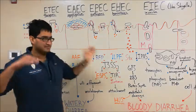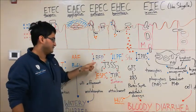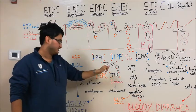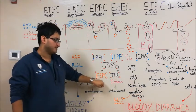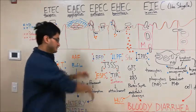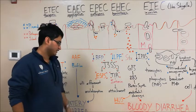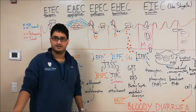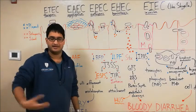When you think EPEC, it initially binds with this BFP, then it secretes in ESPs and TIR through the T3SS. ESPs is going to efface the villi, and then TIR is going to mediate a better adherence. And in totality, these are going to produce what's called the attachment and effacement morphology, as seen on electron microscopy. You'll often see that referred to as A&E or A/E.